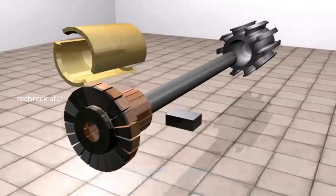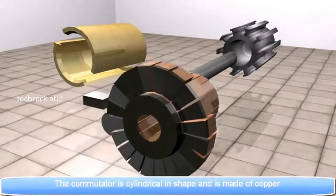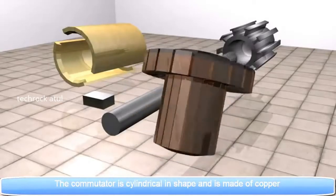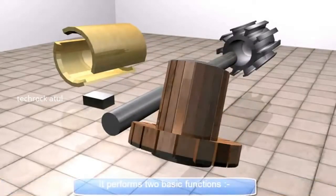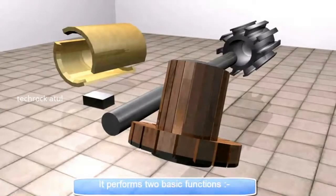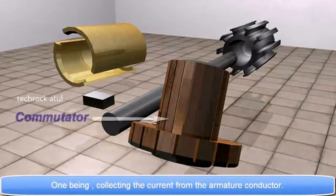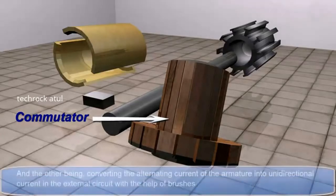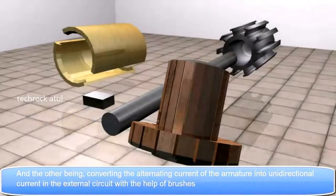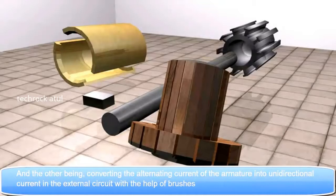Commutator. The commutator is cylindrical in shape and is made of copper. It performs two basic functions. One being collecting the current from the armature conductor. And the other being converting the alternating current of the armature into the unidirectional current in the external circuit with the help of brushes.